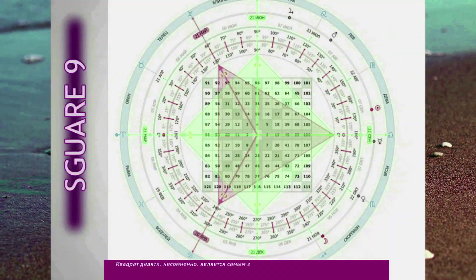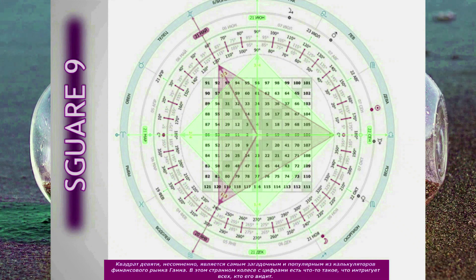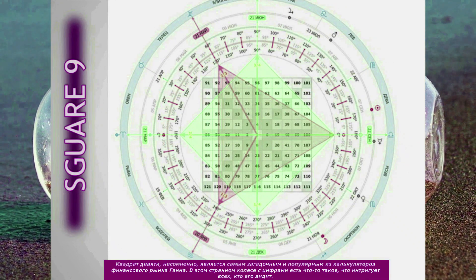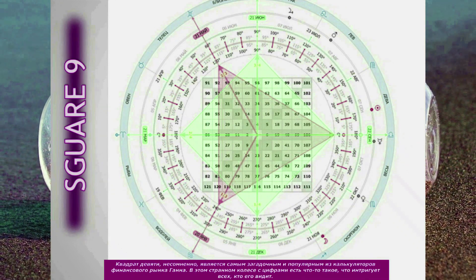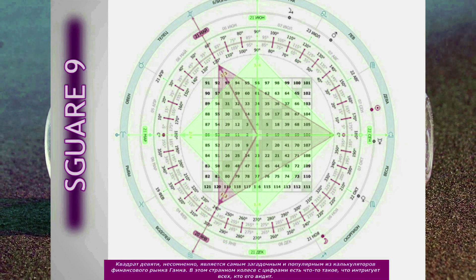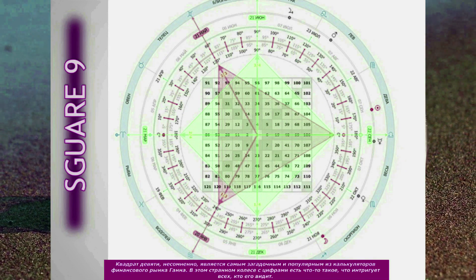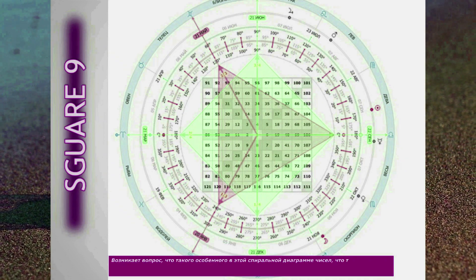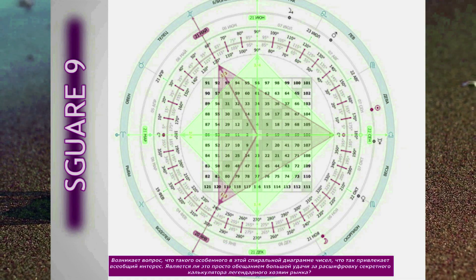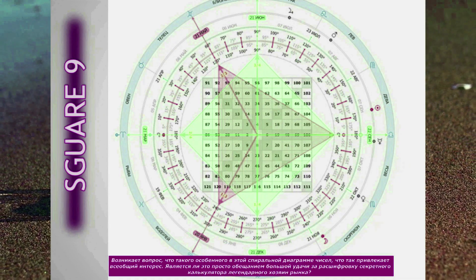The Square of 9 is undoubtedly the most mysterious and popular of Gann's financial market calculators. There is something about this strange number wheel which intrigues all who see it. One wonders what it is about this spiral number chart that so piques everyone's interest.